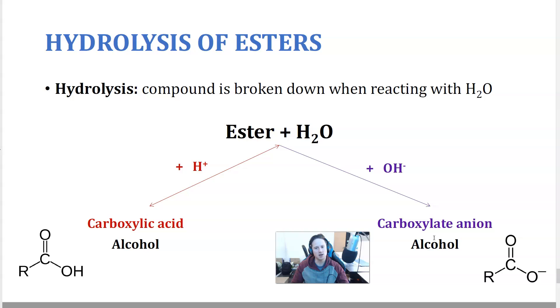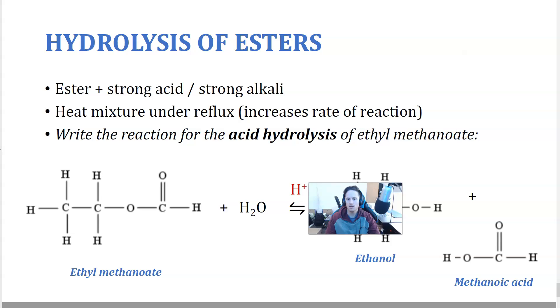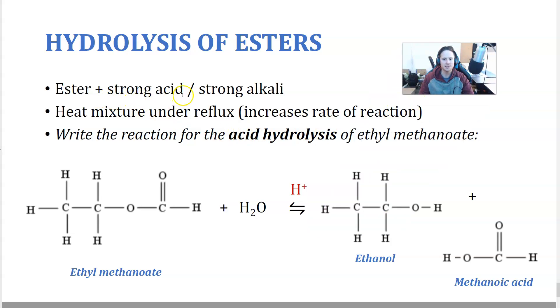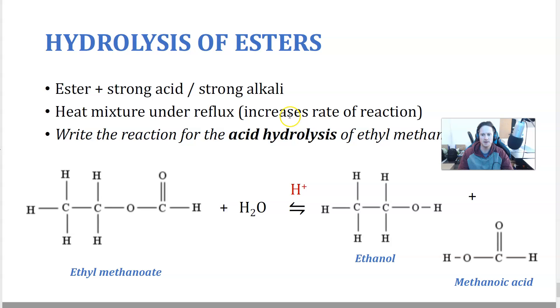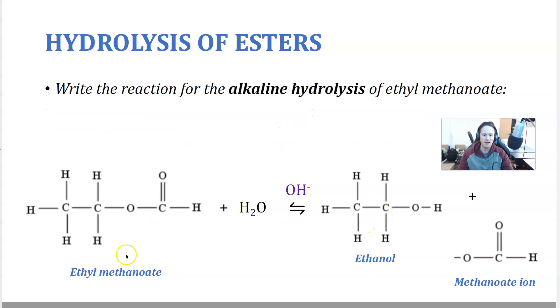So the next thing is the hydrolysis of an ester, which is kind of the reverse of what we've just done. So condensation is to make an ester. Hydrolysis is to break up an ester into its original components. So you can do this in acidic conditions or basic conditions. In acidic conditions, you're going to get a carboxylic acid and alcohol product. In basic conditions, you're going to get a carboxylate ion and alcohol product. So you mix an ester with a strong acid or a strong alkali. You heat the mixture under reflux and you can break this up again.